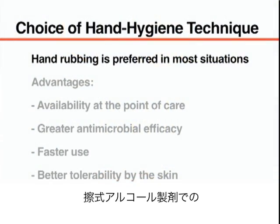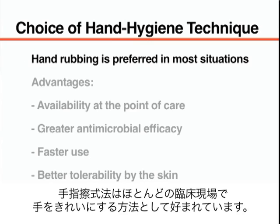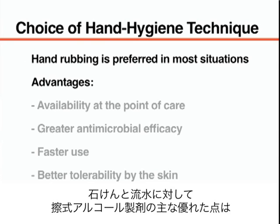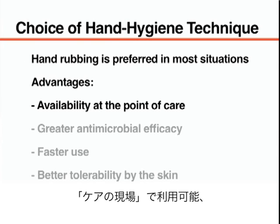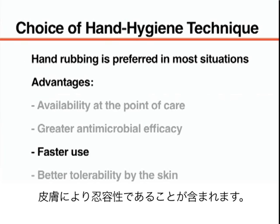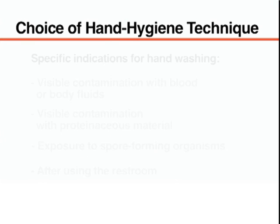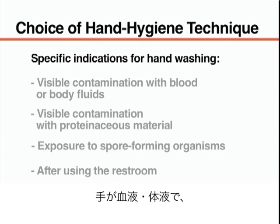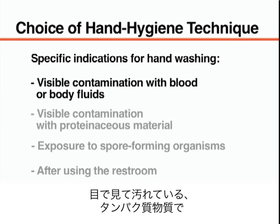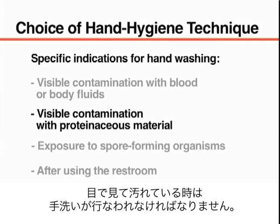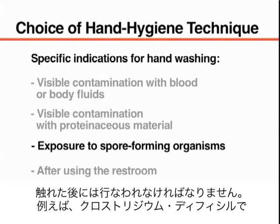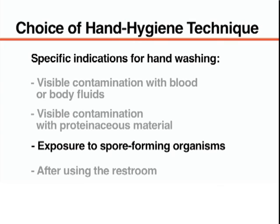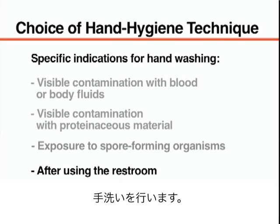Hand rubbing with an alcohol-based formulation is the preferred hand cleansing procedure in most clinical situations. The main advantages over soap and water include availability at the point of care, greater antimicrobial efficacy, faster use, and better tolerability by the skin. However, hand washing must be conducted when hands are visibly contaminated with blood, body fluids, or proteinaceous material, and after exposure to spore-forming organisms — for example, after caring for patients with Clostridium difficile-associated diarrhea or after exposure to Bacillus anthracis. Hand washing should also be performed after using the restroom.